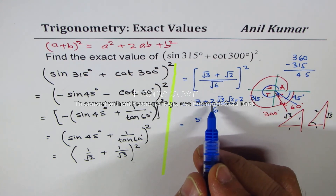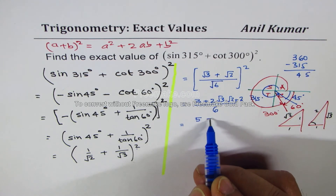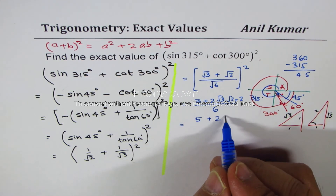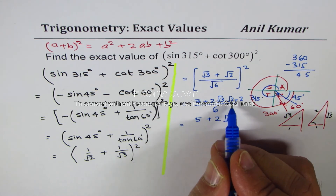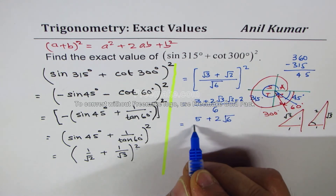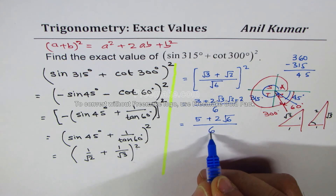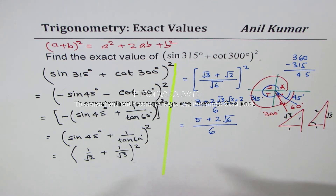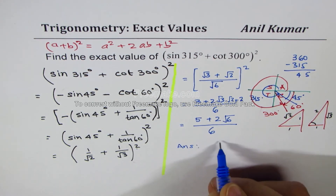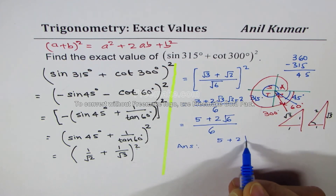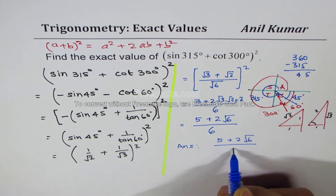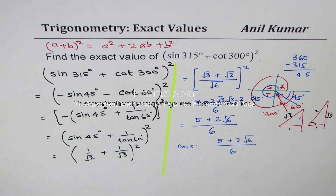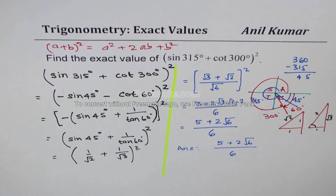3 times 2 divided by 6 — so the answer is 5 plus 2 square root 6 divided by 6. I hope the steps are absolutely clear. Feel free to post your suggestions. Thank you and all the best.